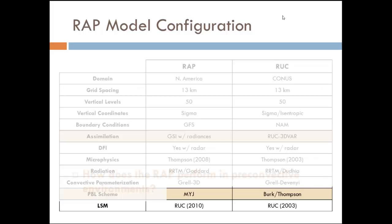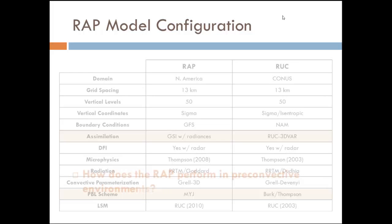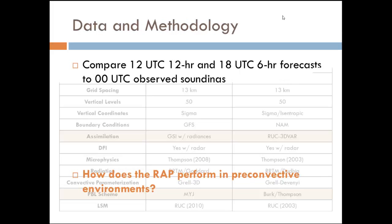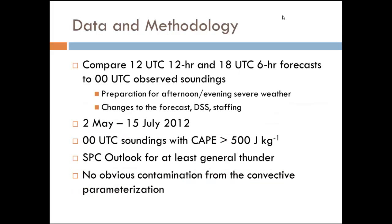Again, most of these updates were not real big — a new version of the microphysics, an updated land surface model. But overall, those big changes were the assimilation and the PBL scheme. That leaves us with how these changes are going to impact our pre-convective environments, and that's essentially what this whole study will be about.